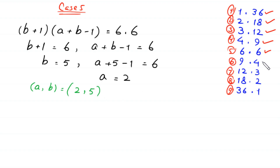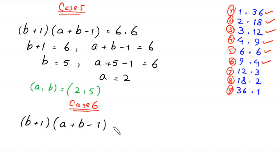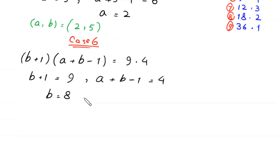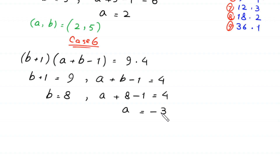In case 6, we set (b plus 1)(a plus b minus 1) equal to 9 times 4. So b plus 1 equals 9 and a plus b minus 1 equals 4. From here b equals 8, and substituting: a plus 8 minus 1 equals 4, so a equals negative 3. Sixth pair of solutions: (a, b) = (−3, 8).